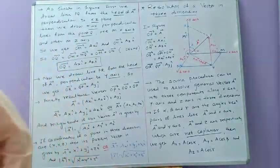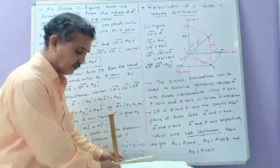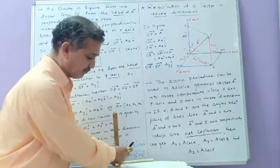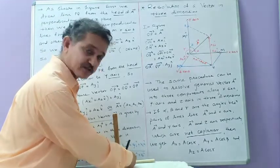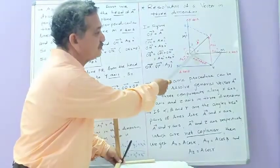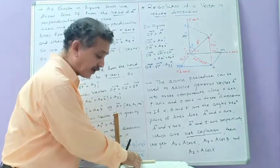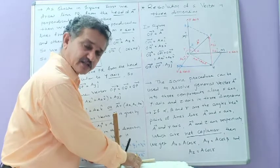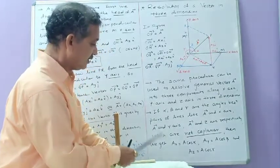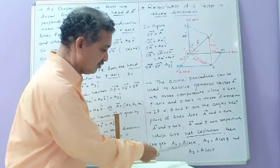I will show you the same three-dimensional plane diagram. This is the x-axis, this is the y-axis, this is the z-axis, and this is vector A. This vector A makes an angle alpha with the x-axis. Along the x-direction, you get component vector OM, and this Aₓ equals the magnitude A multiplied by cosine of the angle alpha. So Aₓ equals A cos α.